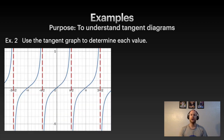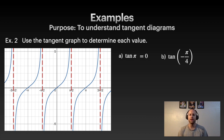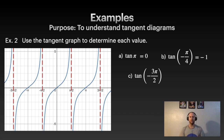Now, given a tangent graph, let's determine values at certain points. For tan(π), find where x = π on the graph — tan(π) = 0. For tan(−π/4), look halfway between 0 and −π/2 on the graph — that value is −1. For tan(−3π/2), that is an asymptote, so that value is undefined.